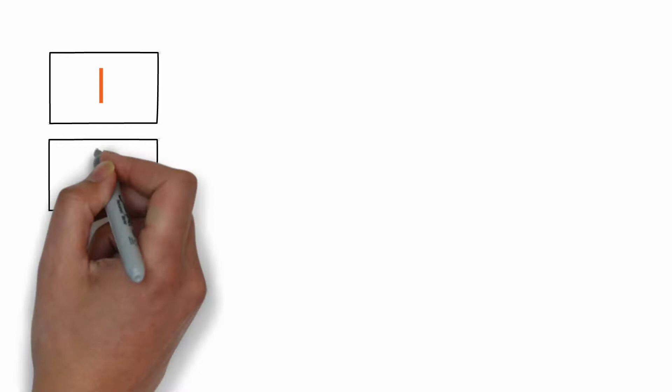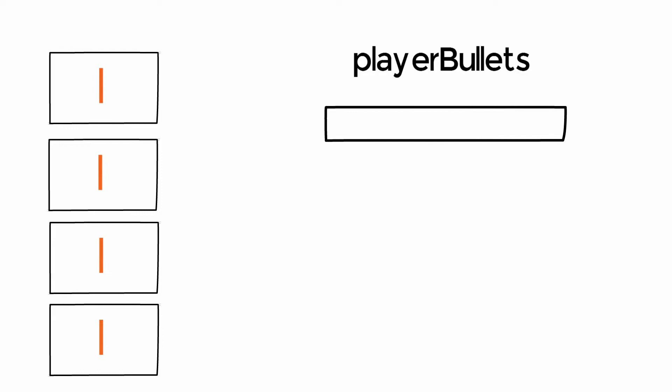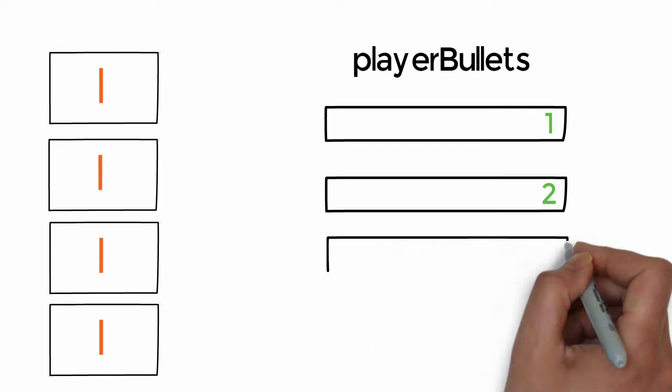We currently have a single player bullet variable — one of these objects we've built. Simply creating three more of those to have four bullets isn't going to work well; it becomes cumbersome and awkward. What we need is a special variable that can hold all four bullets in a way that makes them easy to access. This is where our array comes in. We can create a variable called player bullets which will hold all bullets the player can use. An array allows us to create numbered slots, and each slot holds a variable.